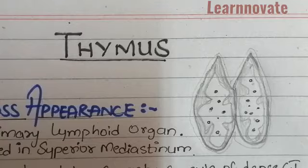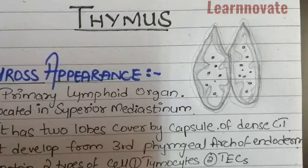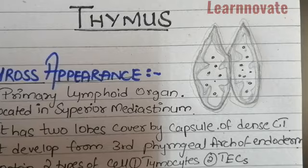Now we are going to discuss about the thymus, which is the first primary lymphoid tissue for the production of lymphocytes. We will first discuss some of the gross features about the thymus. I have made notes of a few important points that you can learn easily by taking notes — these are the features we should know about the thymus.